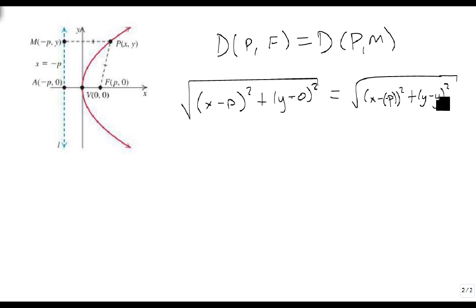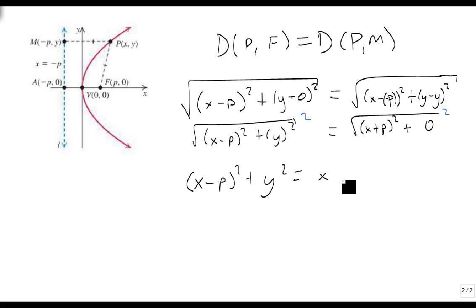Well, this is easy. Y minus y is zero, this becomes x plus p squared, and this is of course going to be equal to x minus p squared plus y squared. And since we've got an equation, we'll just square both sides, and that gives us x minus p squared plus y squared equals x plus p squared.